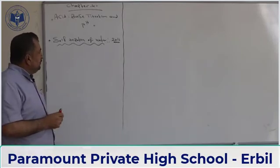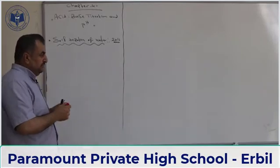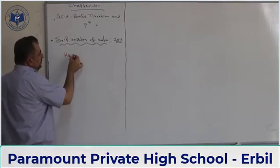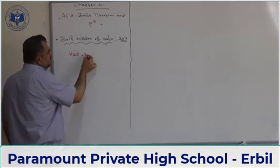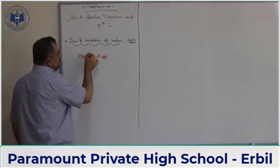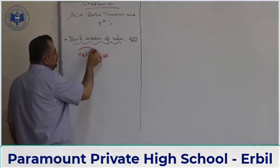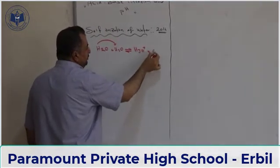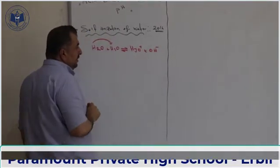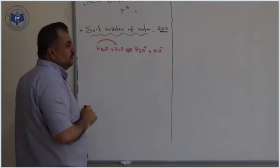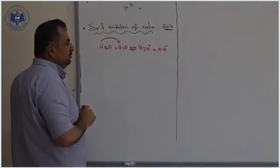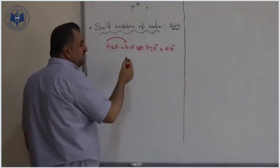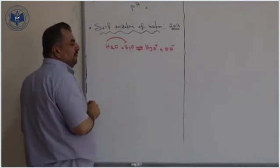The first subject in this chapter is self-ionization of water. Two water molecules transfer a proton from the first one to the second one, forming hydronium and hydroxide ions. This is called self-ionization of water.